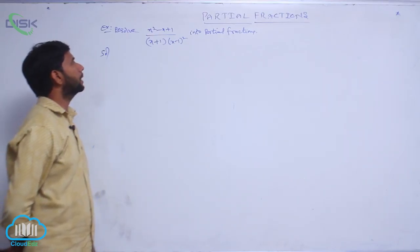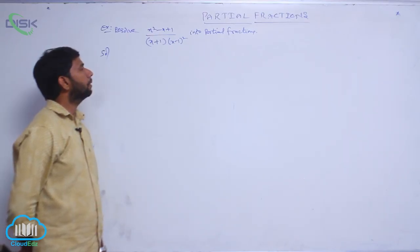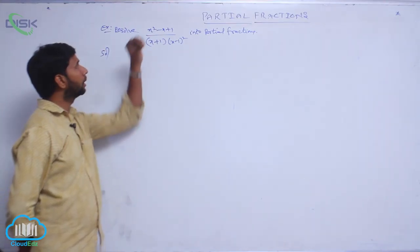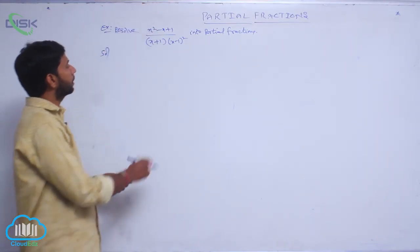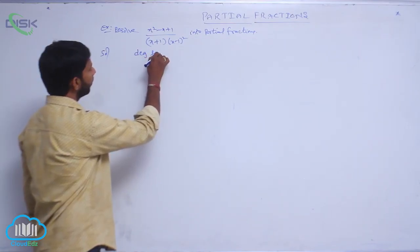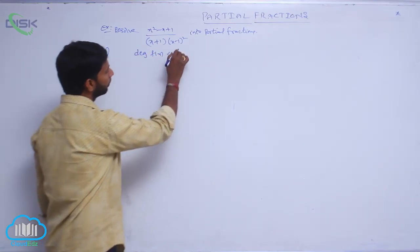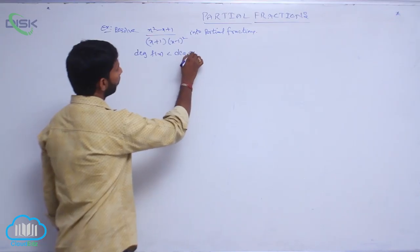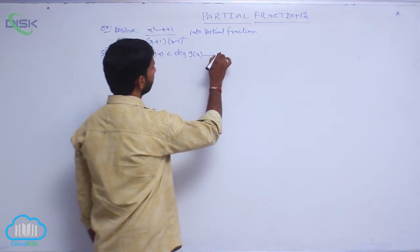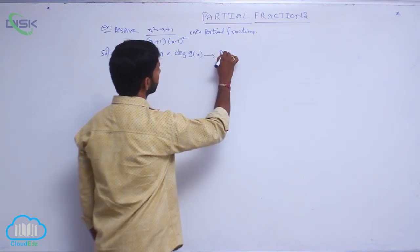Resolve x squared minus x plus 1 by x plus 1 into x minus 1 whole square into partial fractions. Here, degree of f(x) is less than degree of g(x), which implies it is said to be proper fractions.